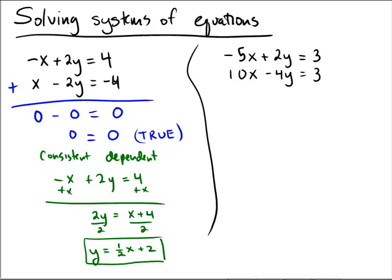Okay let's try a second shot then. On the right hand side we have negative 5x plus 2y equals 3 and 10x minus 4y equals 3.